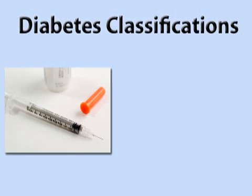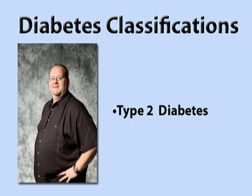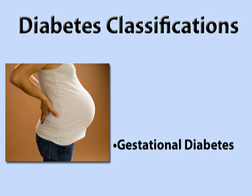The way in which insulin fails determines how a diabetic is classified. There are three types of diabetes: type 1, type 2, and gestational diabetes.